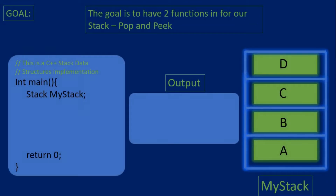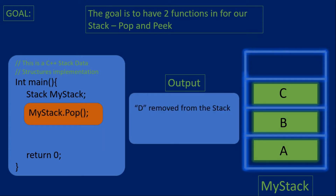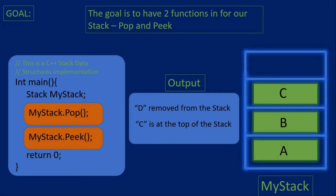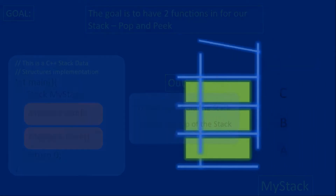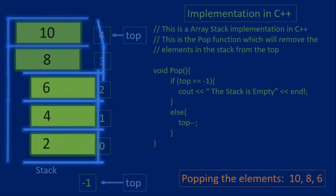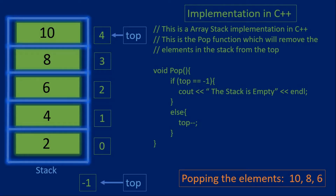The goal of this video is to create two functions: one that will remove an element from the top of the stack, which will be the pop function, and another one that will get and return the element at the top of the stack. In this case, say we have a stack with five elements: two, four, six, eight, and ten.